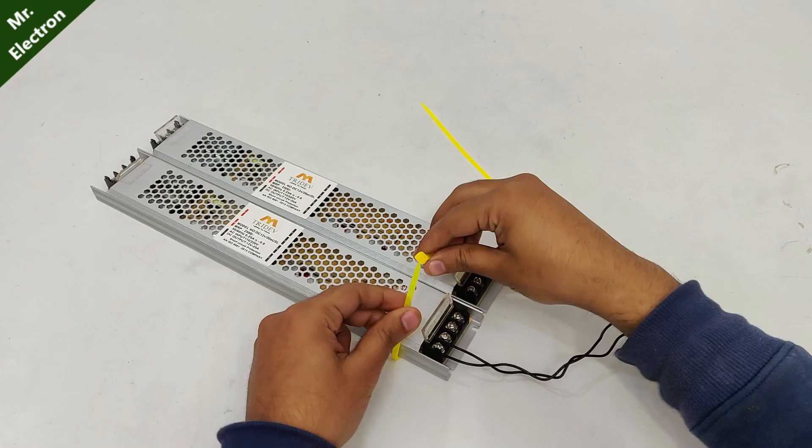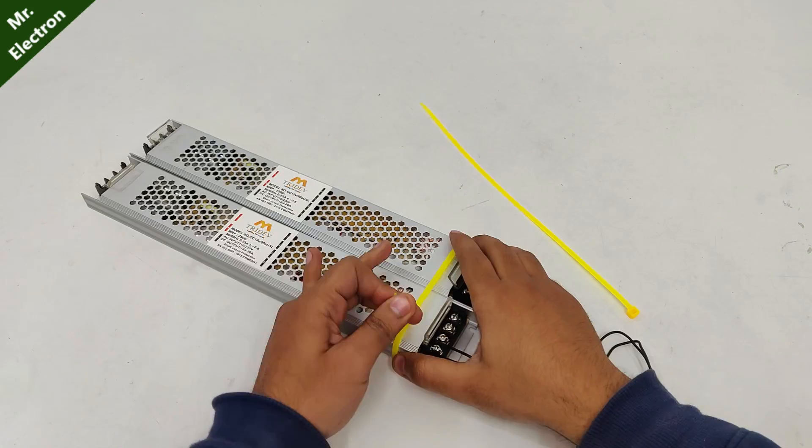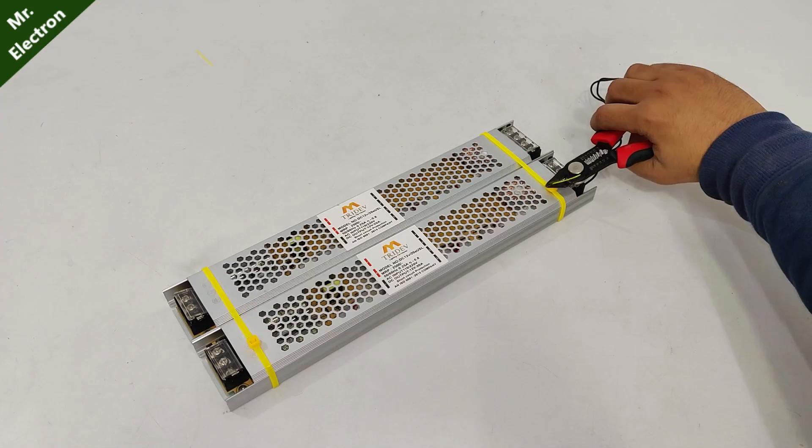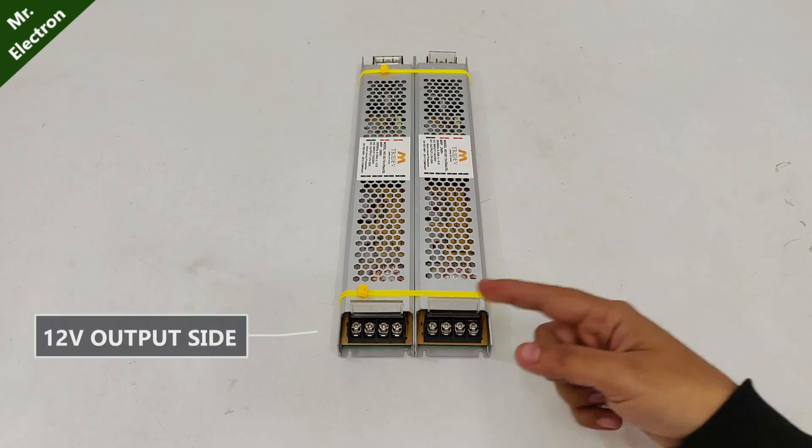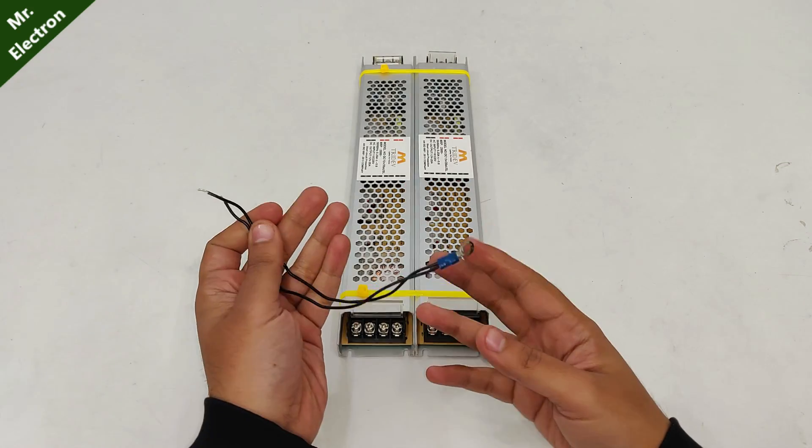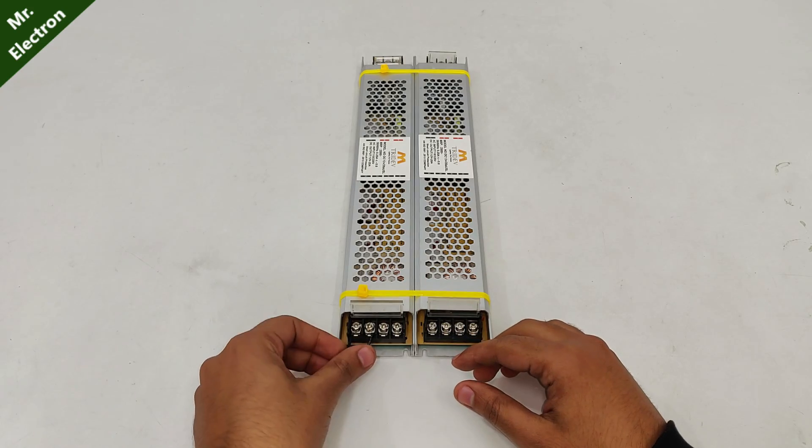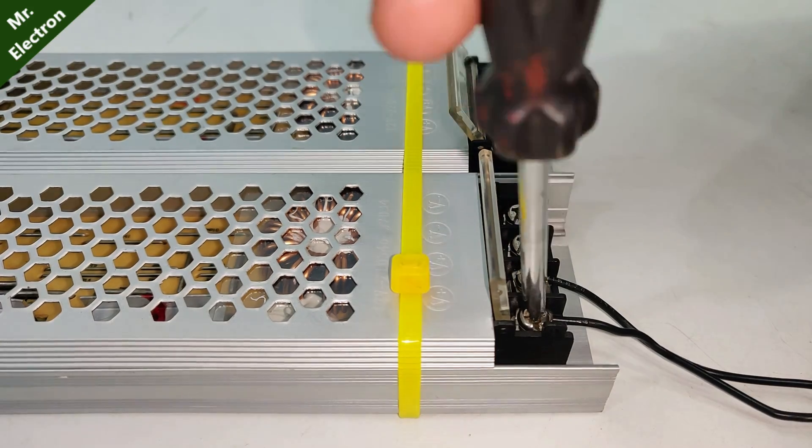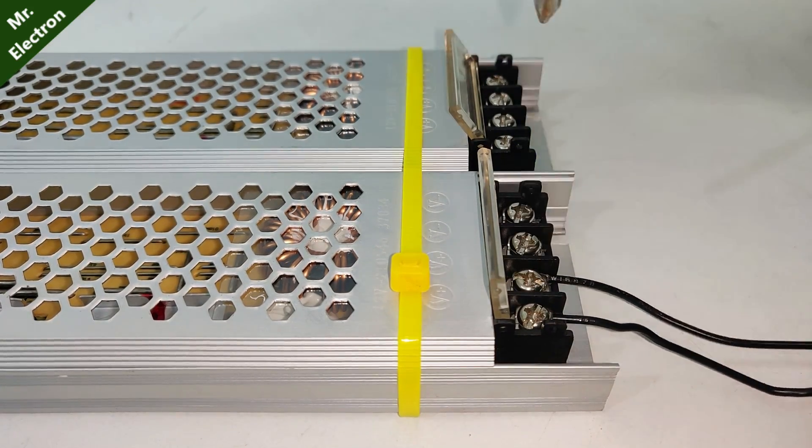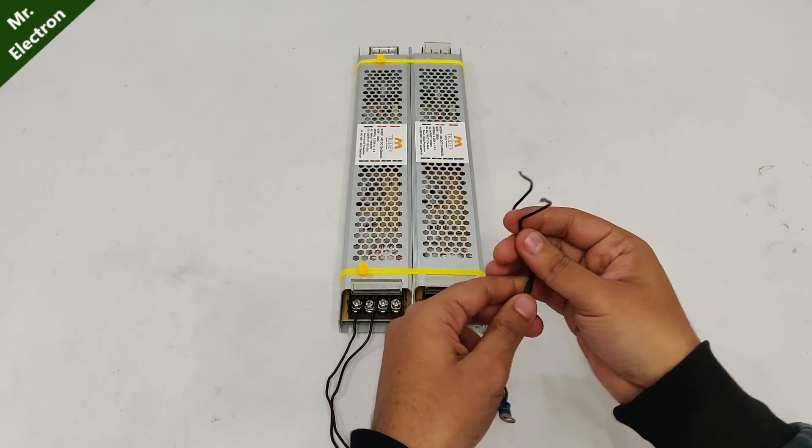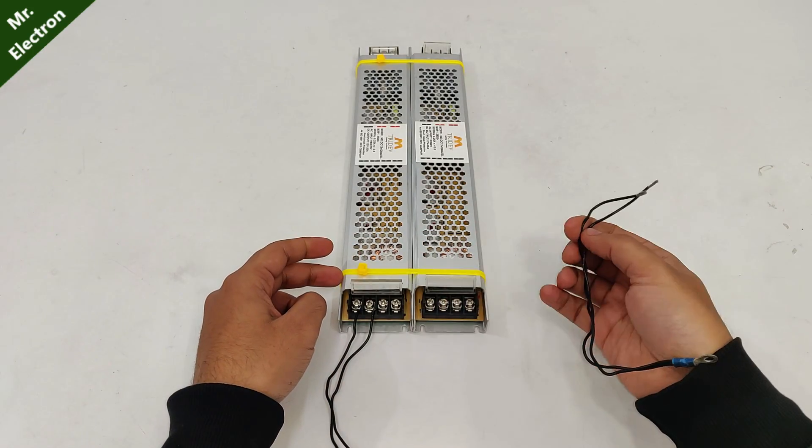Now I have two identical power supplies which means that I can connect them in series. So starting with the 12 volts output side, take two wires with a tapping point here and connect them to the positive output terminals of one power supply as shown. Next take another piece and connect it to the negative of the other power supply.